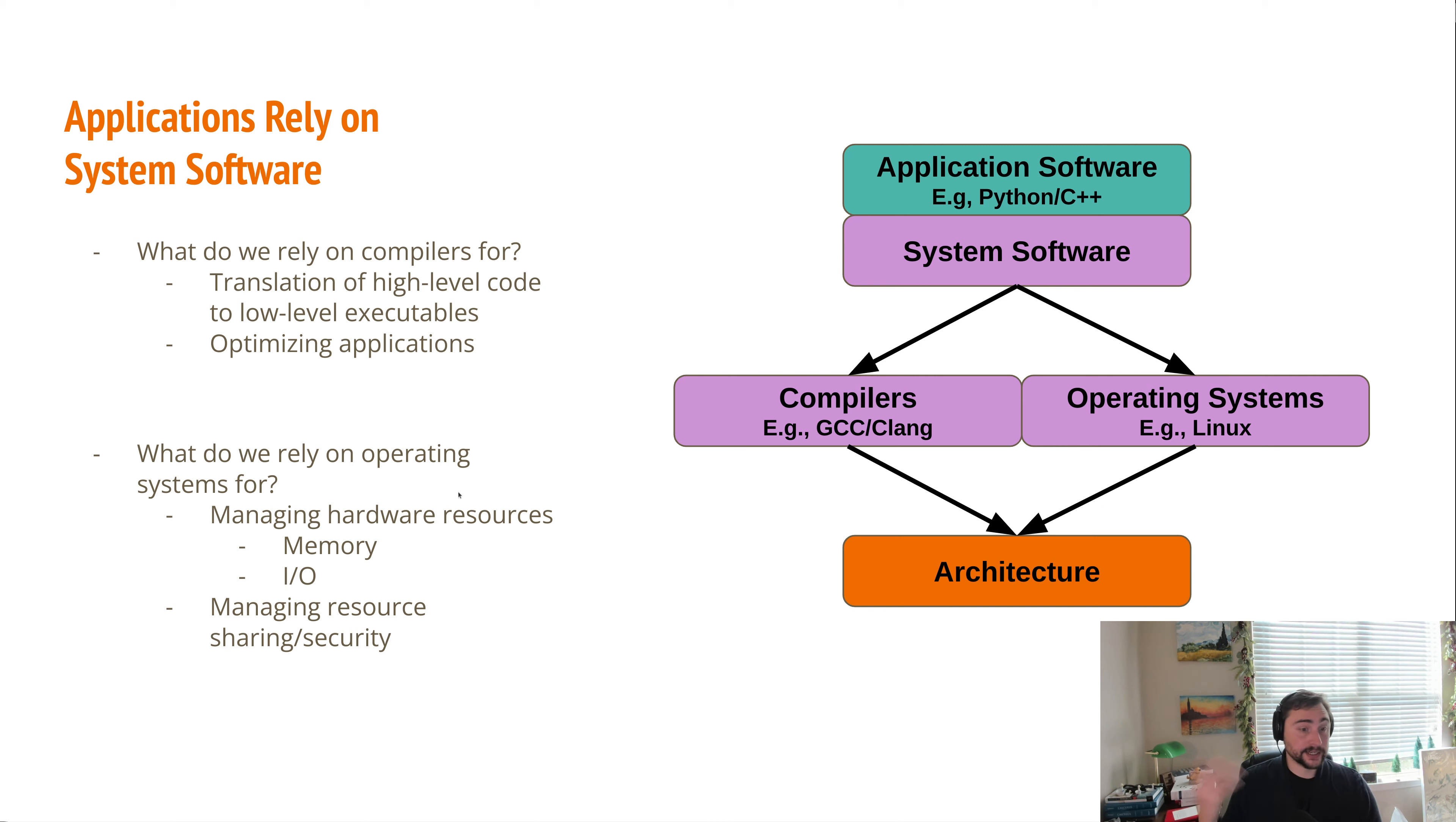Now what exactly do we rely on operating systems for? Well, we rely on them for a great many things. We rely on them for managing our hardware resources, doing things like memory allocation and interacting with I/O devices. It would be incredibly frustrating if every time we wrote a high-level piece of application software, we had to build a way to allocate memory or interact with I/O devices. So fortunately, operating systems provide this layer of abstraction, and we have a nice clean interface in which we can do both of these things.